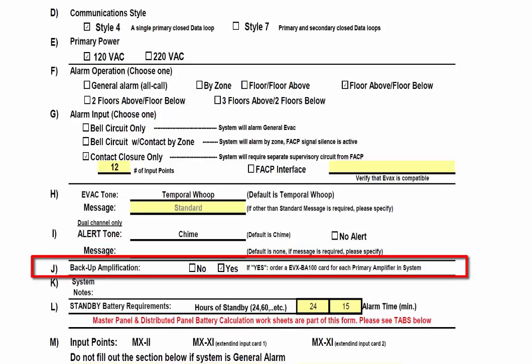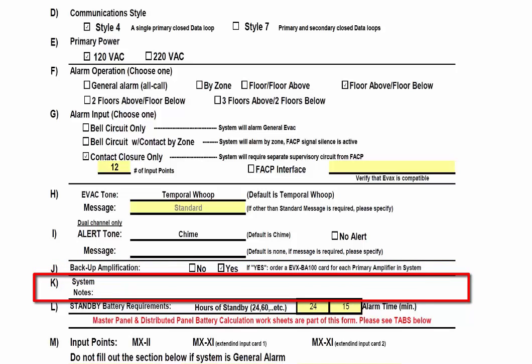Item J, Backup Amplification. Choose yes or no if you would like backup amplification for each primary amplifier on the system. If you choose yes, you will need to order an EVX-BA100 card for each primary amplifier on the system. System Notes is where you can put specific notes regarding your EVAX panel, such as the projected install date or the type of speaker to be installed on the system.